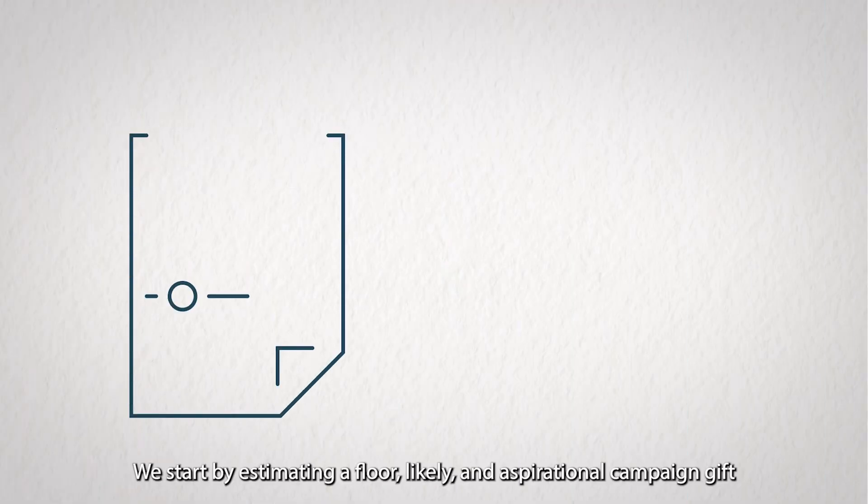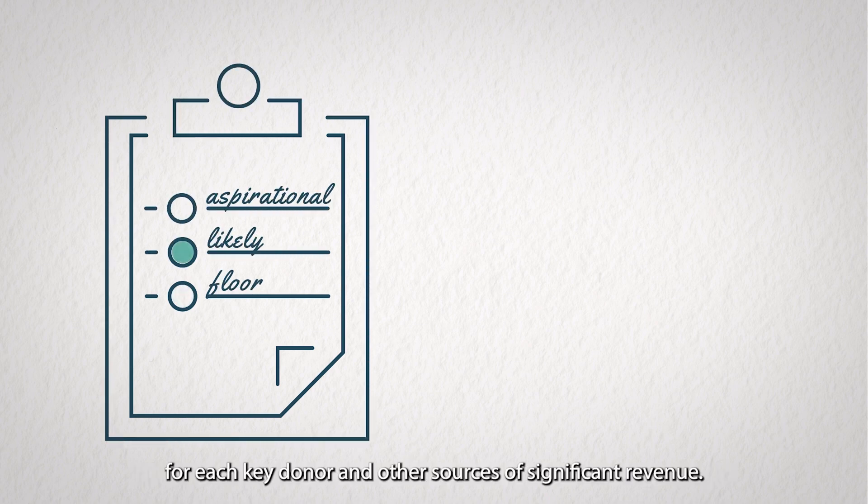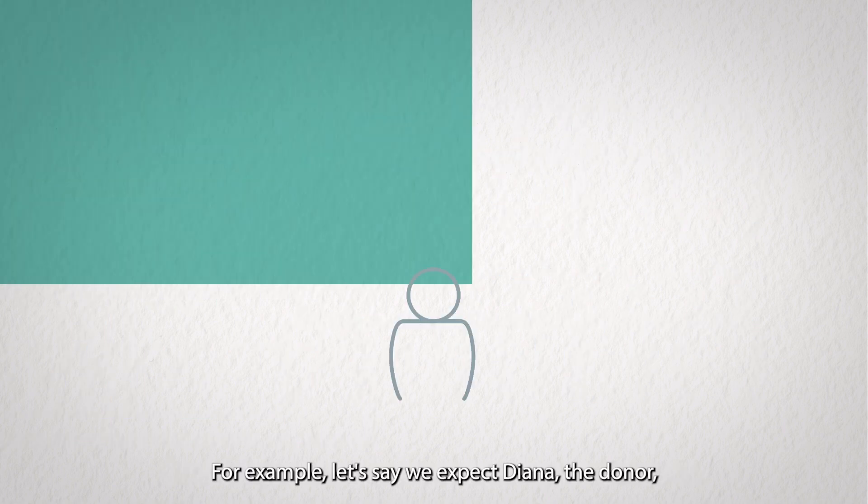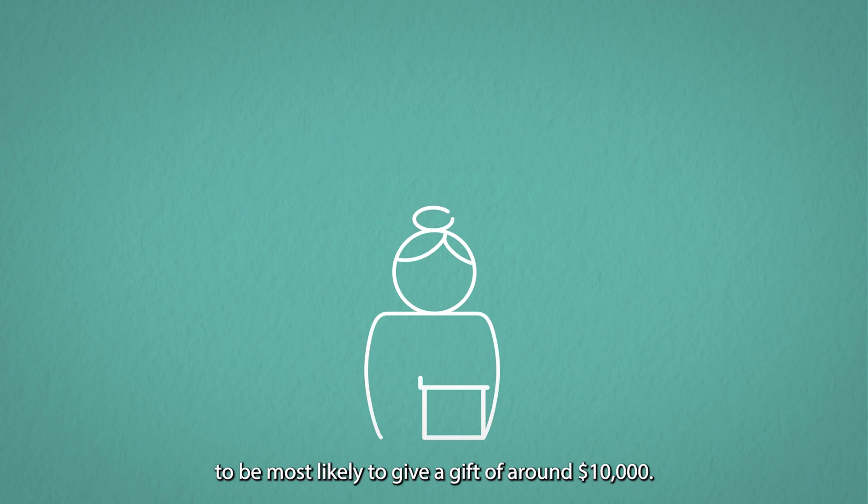We start by estimating a floor, likely, and aspirational campaign gift for each key donor and other sources of significant revenue. For example, let's say we expect Diana, the donor, to be most likely to give a gift of around $10,000.